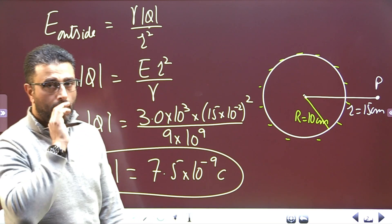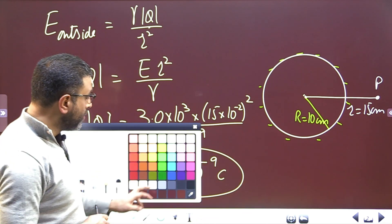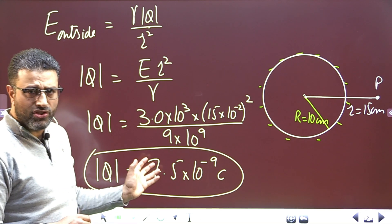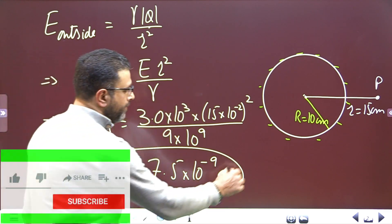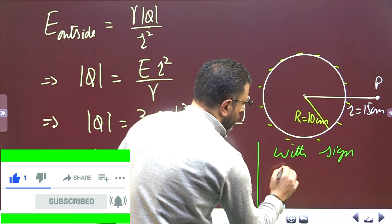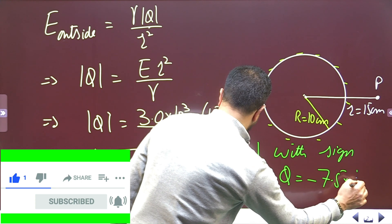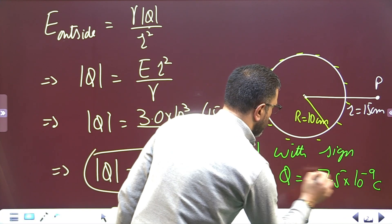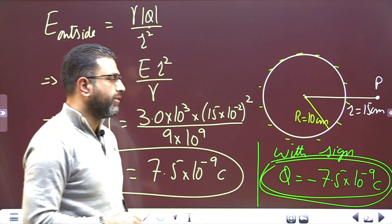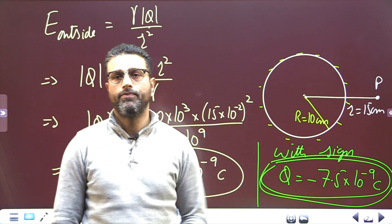Now we already know that this charge is negatively charged, so if we write this charge along with that sign: Q = -7.5×10⁻⁹ Coulomb. That's what we are asked to find out in this problem.